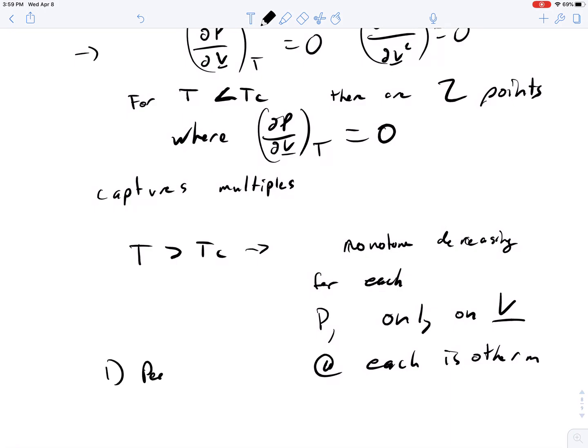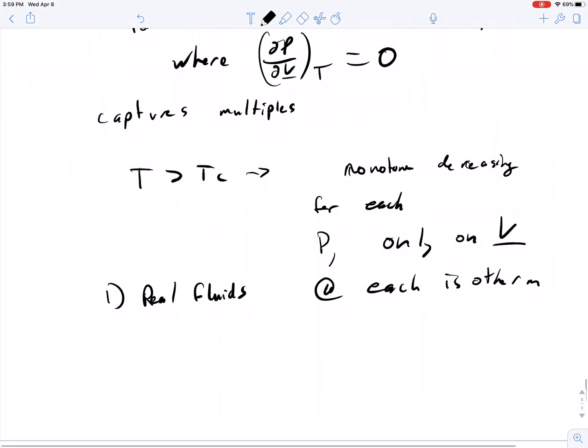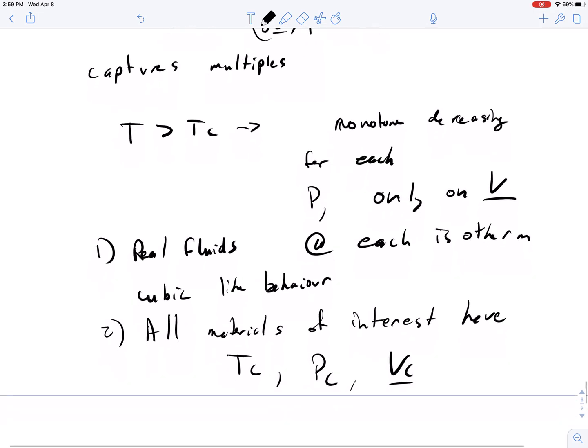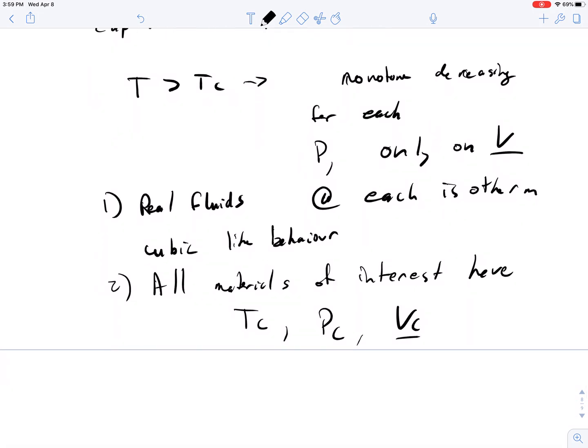So real fluids really follow a cubic-like behavior where you have multiple phases. And two, all materials of interest have Tc, Pc, Vc. By looking at where the Tc, Pc, Vc are, we can really get an understanding about the generalized behavior of the fluid properties and material properties of these systems.